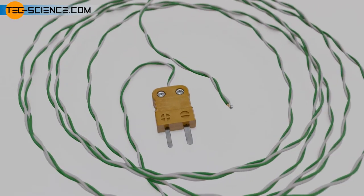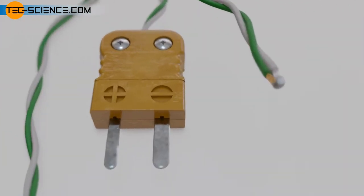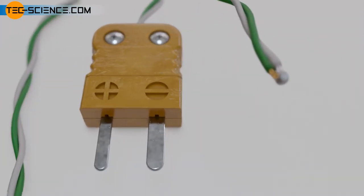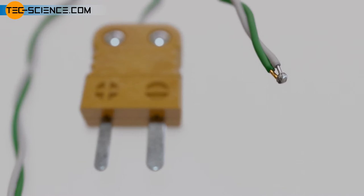A thermocouple consists of two electrical conductors connected together at one end. This junction is exposed to the temperature to be measured. Due to the heat, an electrical voltage is generated, which serves as a measure of the temperature. How such a voltage results will be explained in the following.